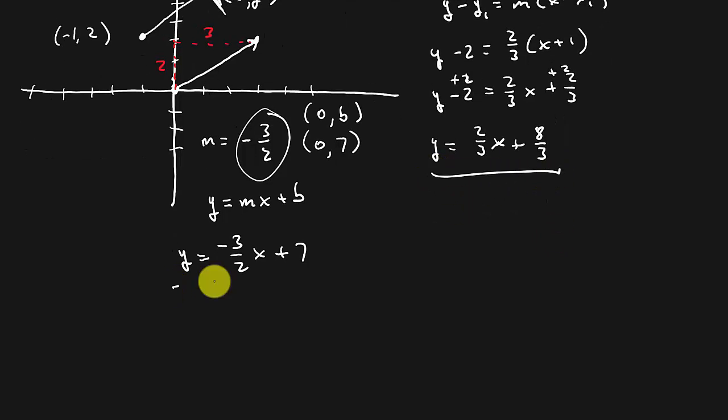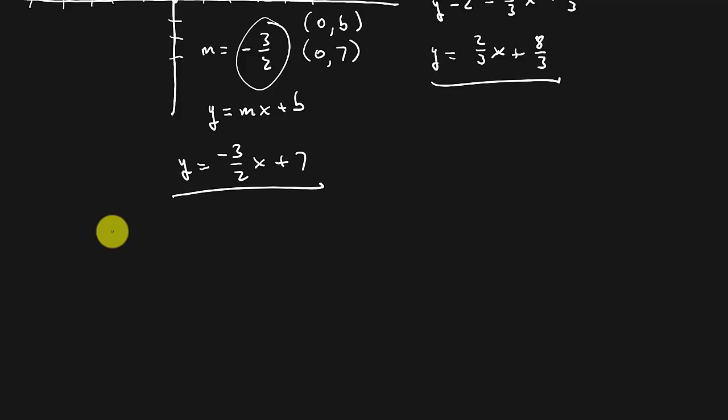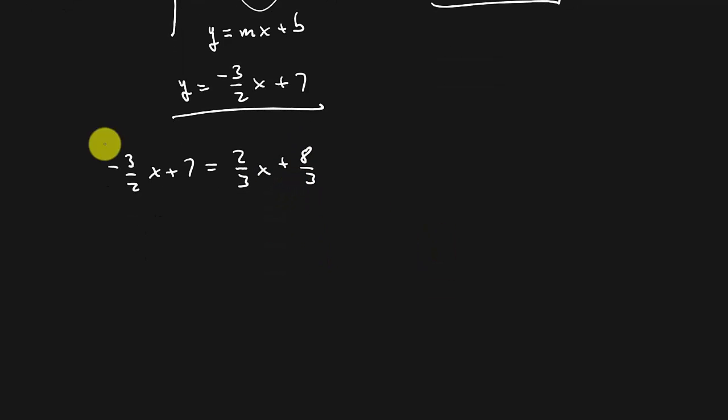We have these two lines here, so we're going to set them equal to each other. And to solve it, we can multiply everything through by 6 to get rid of all the fractions. So that's going to be -9x + 42 = 4x + 16. And so that's going to be -13x, and then 16 - 42 = -26. So x = 2.